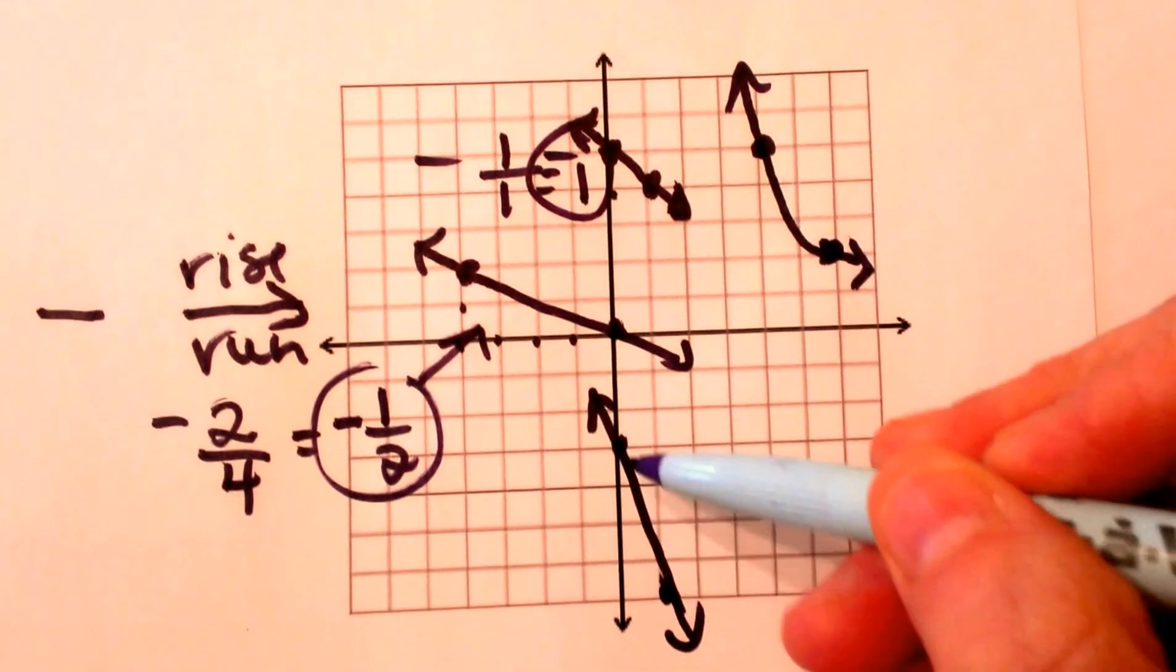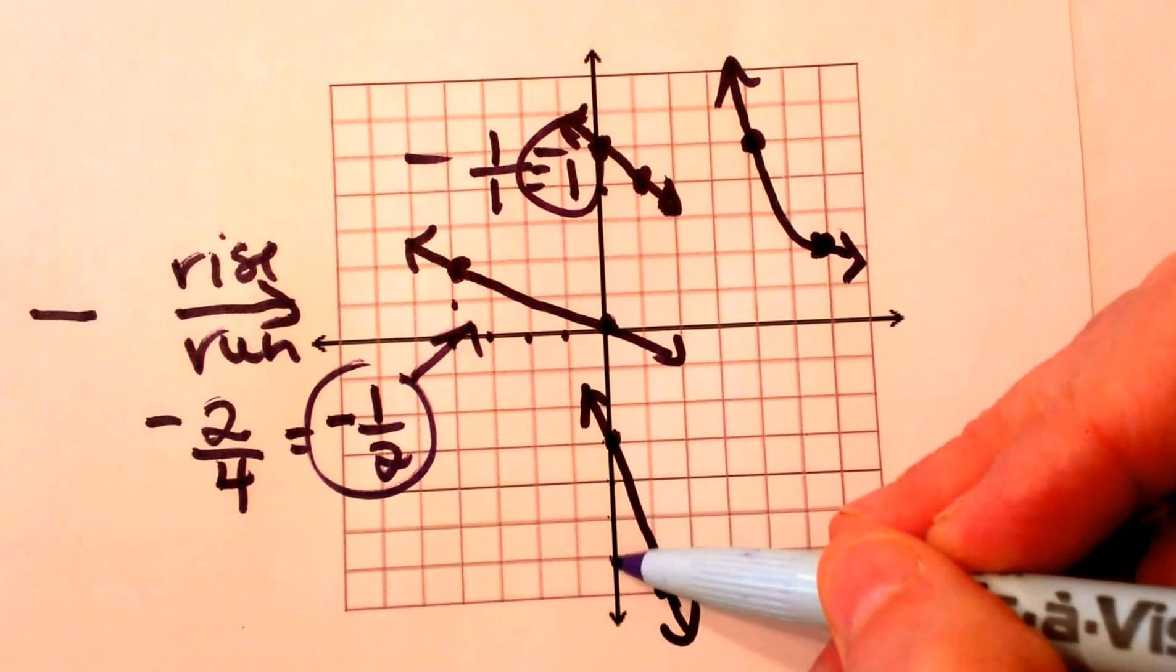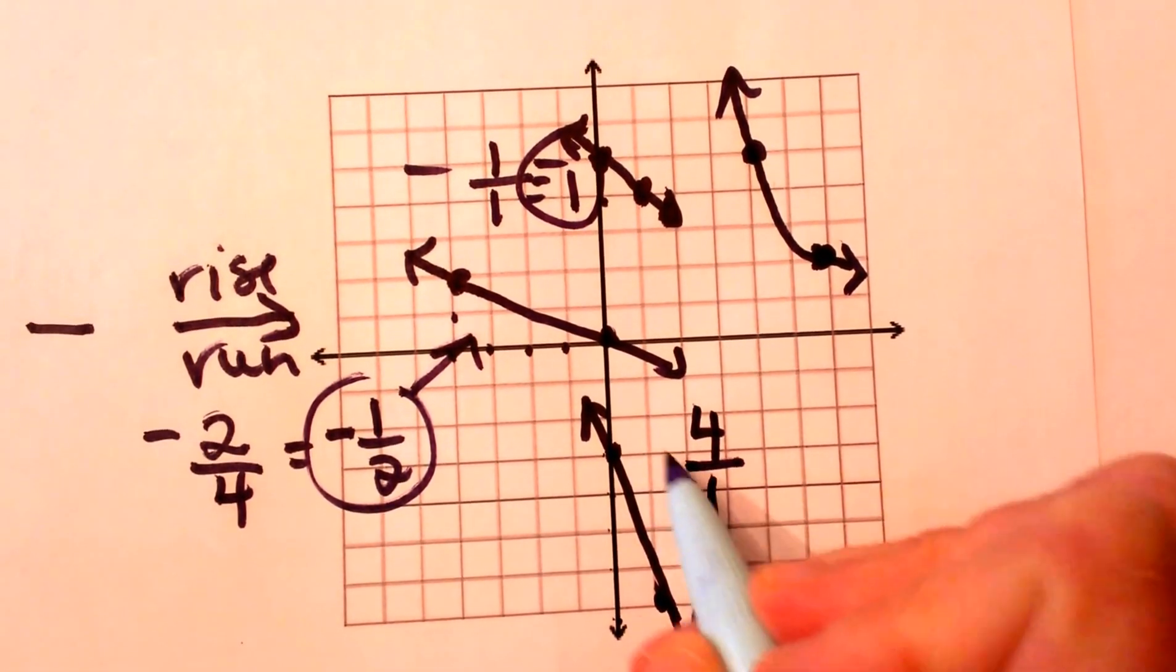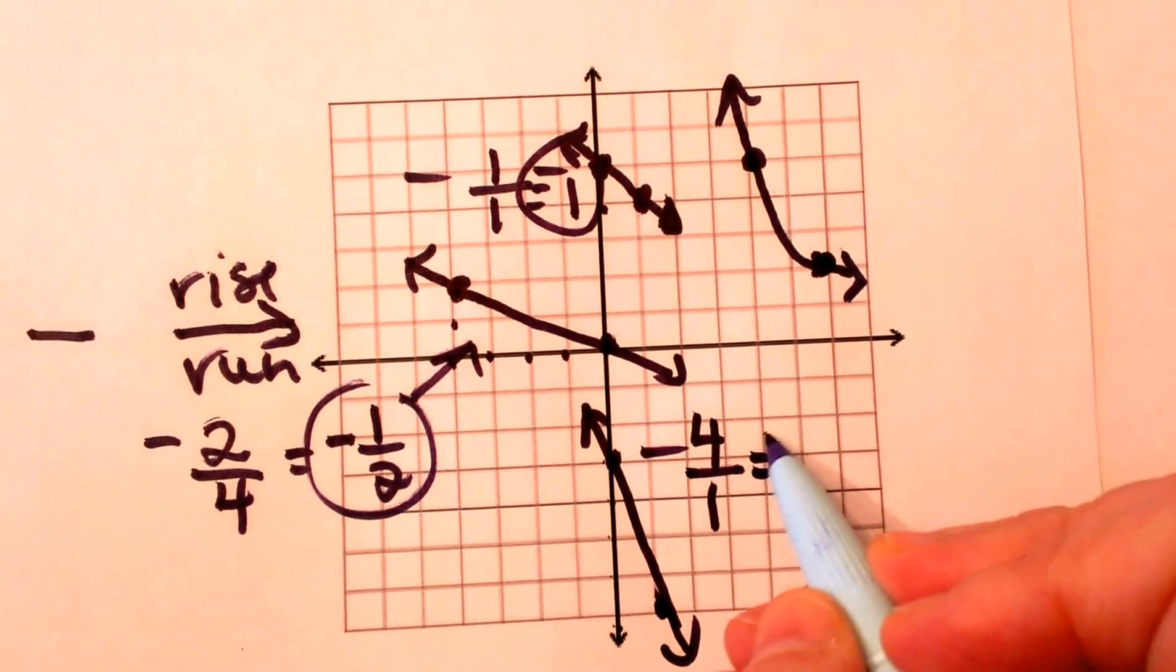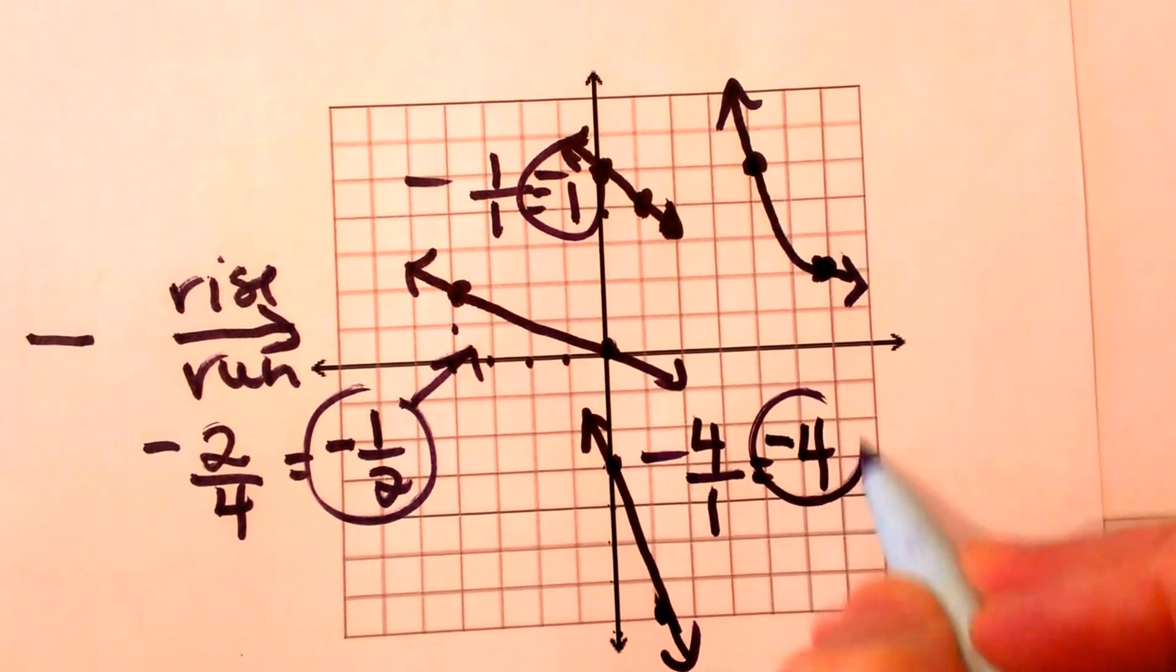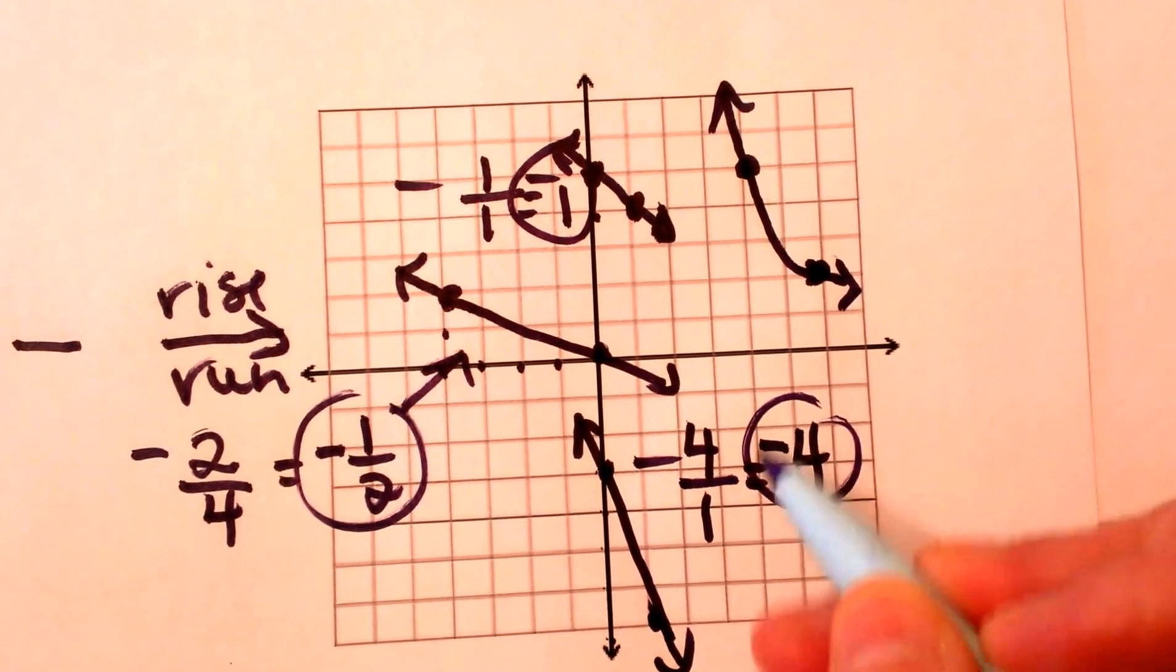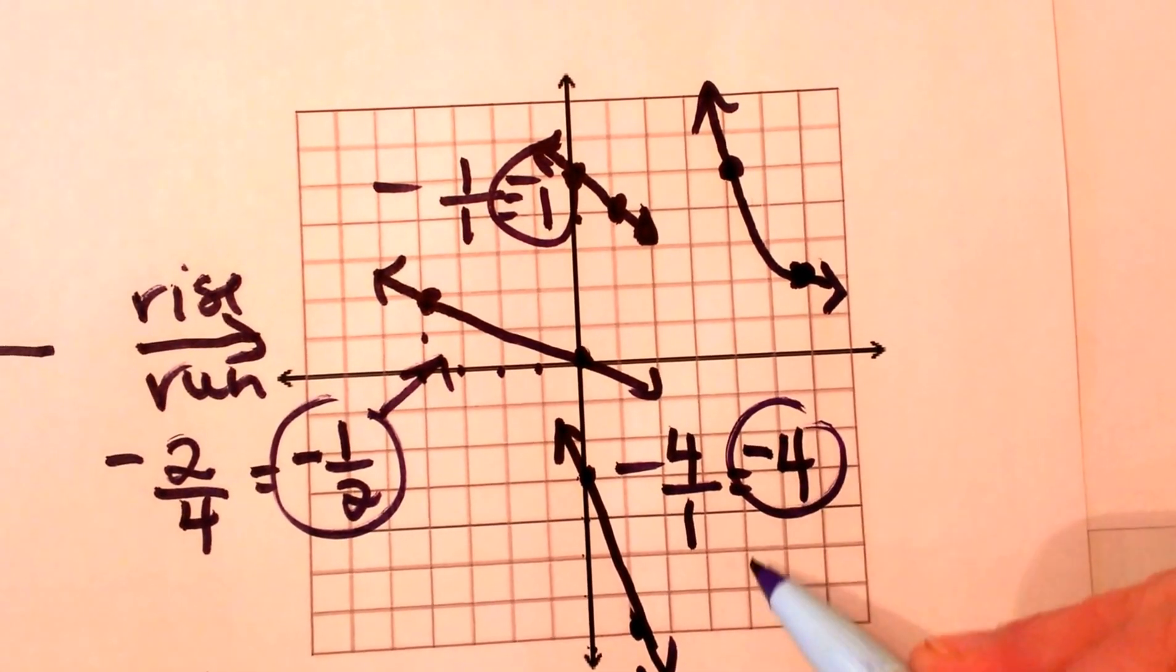Here's one down here, we're going down 1,2,3,4 over 1, so 4 over 1, which is the whole number, negative 4. So this line is a little steeper, and it's got a larger absolute value of a negative number.